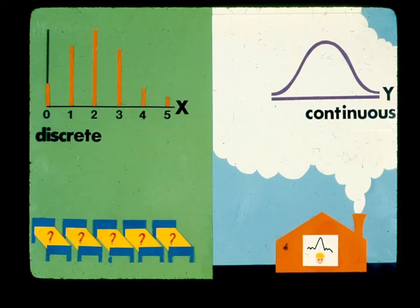In contrast, the variable Y of the second example, which represents FEV measurement in a factory, is an example of a continuous random variable whose distribution is represented by a smooth curve with possible values found anywhere in an interval, including fractions.